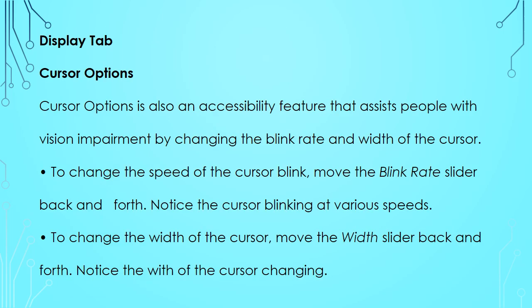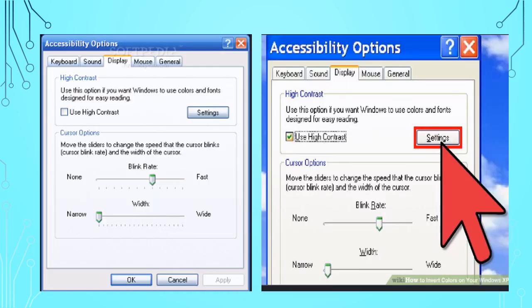Cursor Options is also an accessibility feature that assists people with vision impairment by changing the blink rate and width of the cursor. To change the speed of the cursor blink, move the blink rate slider back and forth and notice the cursor blinking at various speeds. To change the width of the cursor, move the width slider back and forth and notice the width changing. Then click Apply and OK. Look at the figure to understand from where you have to set the Accessibility Options.